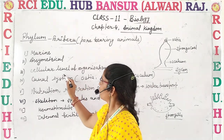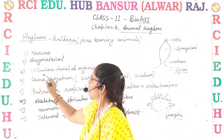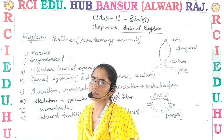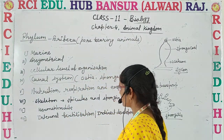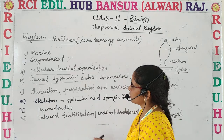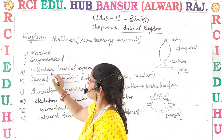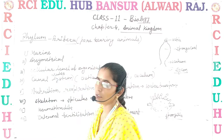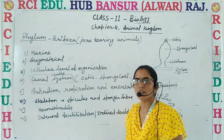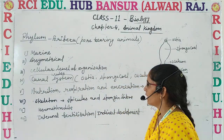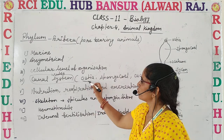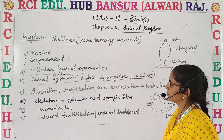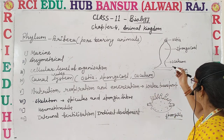The main and peculiar feature of Porifera is that they have a water canal system for transport. This is the peculiar feature of Porifera — the water canal system, which consists of ostia, spongocoel, and osculum. Let's see through the diagram.